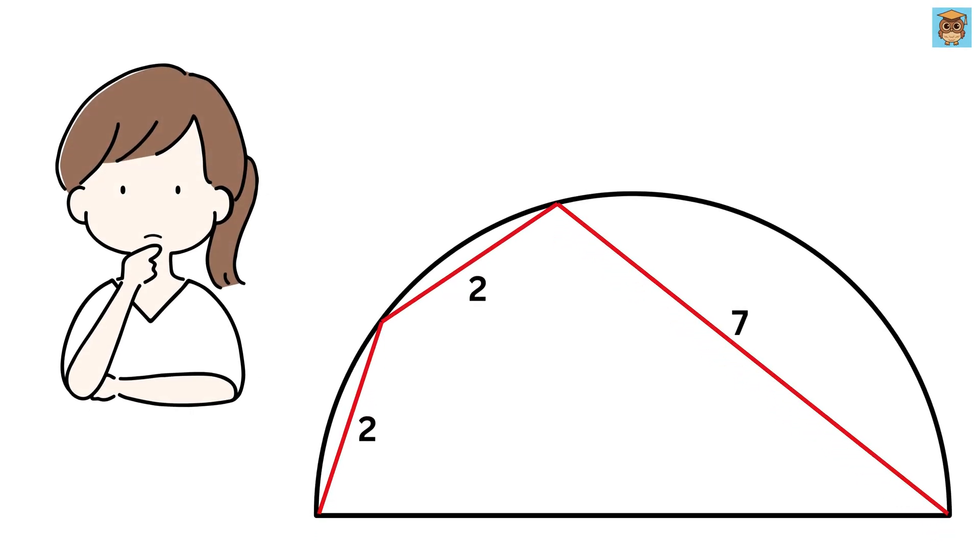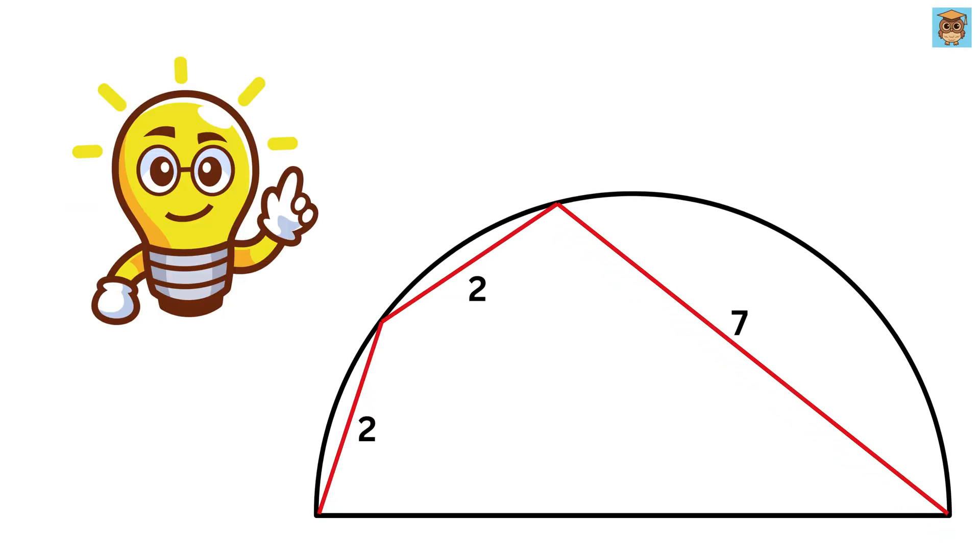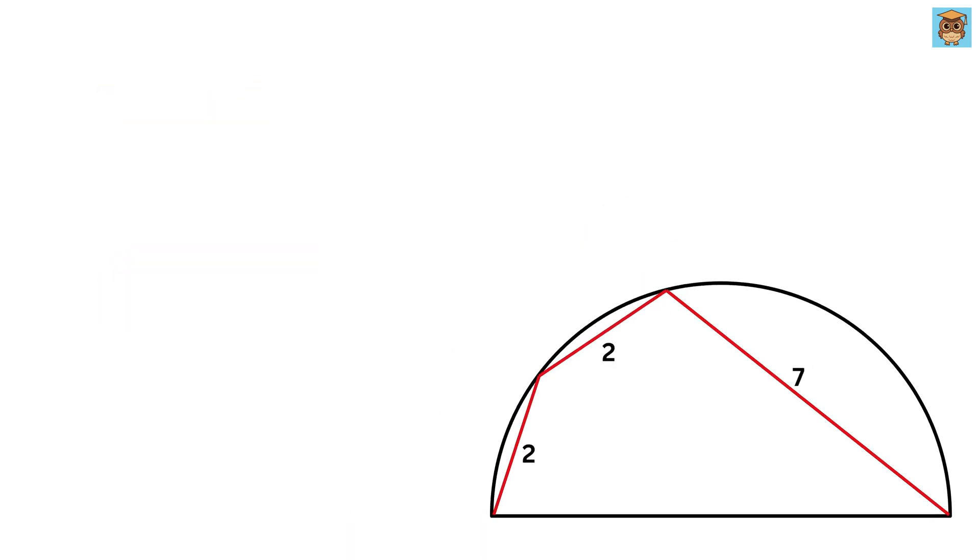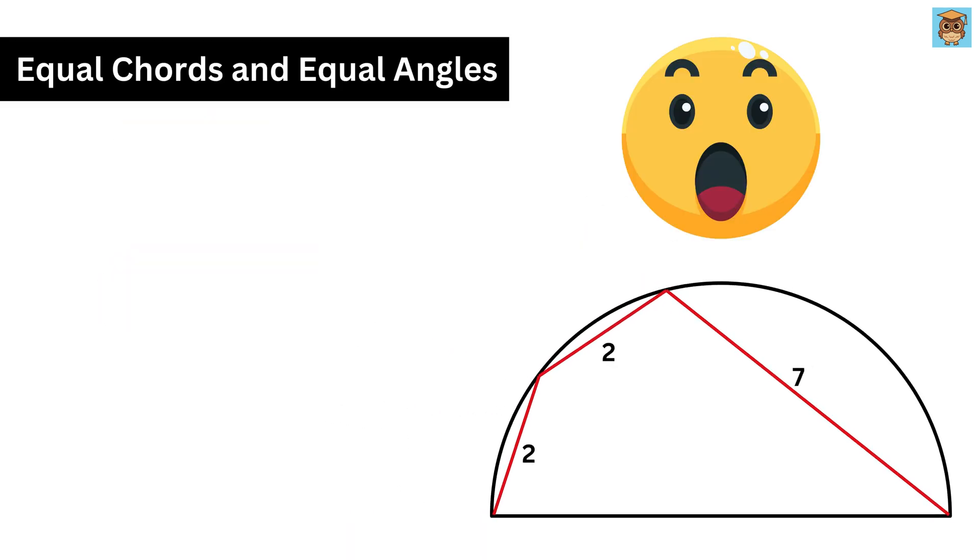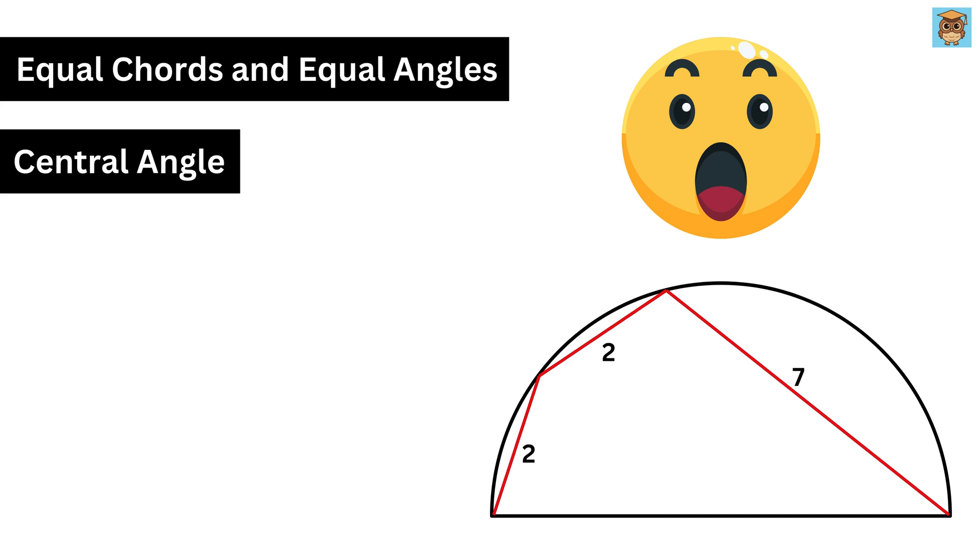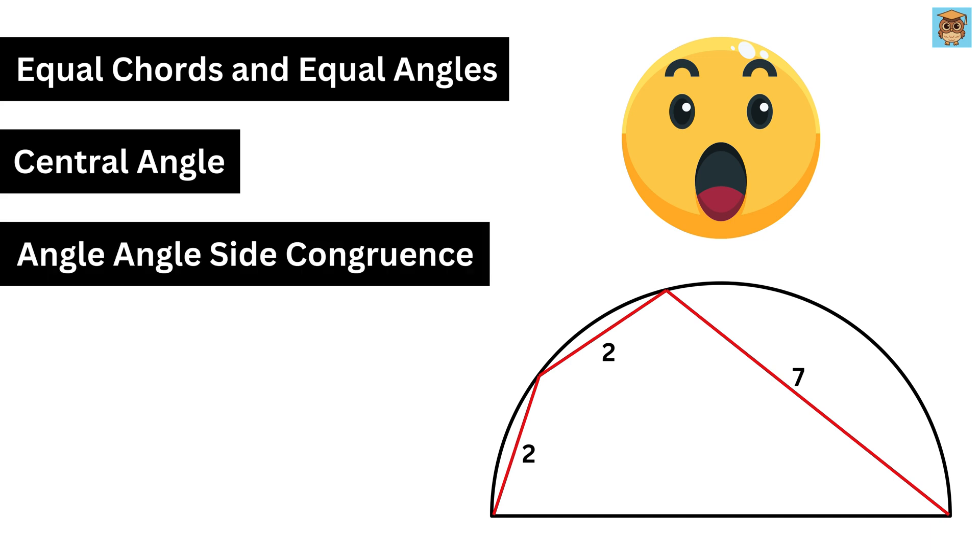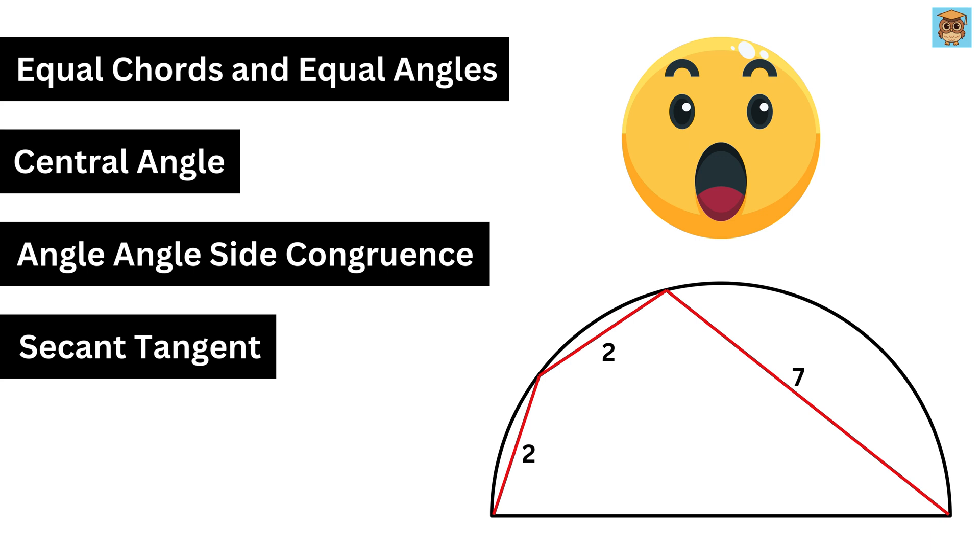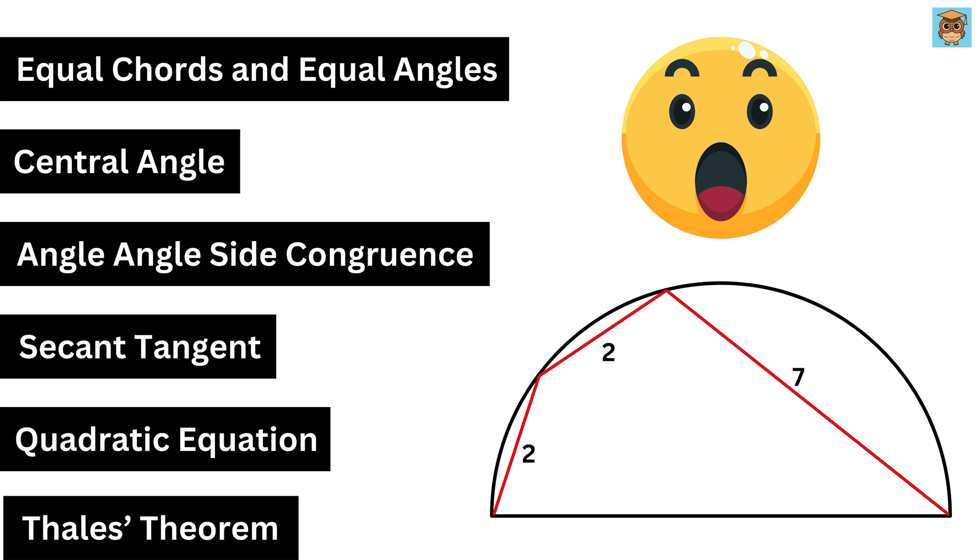Today we will be solving this Math Olympiad question, where we will apply a lot of circle-related concepts in this single problem, like equal chords and equal angles theorem, central angle theorem, angle-angle side congruence criterion, second tangent theorem, quadratic equation, and Thales' theorem.